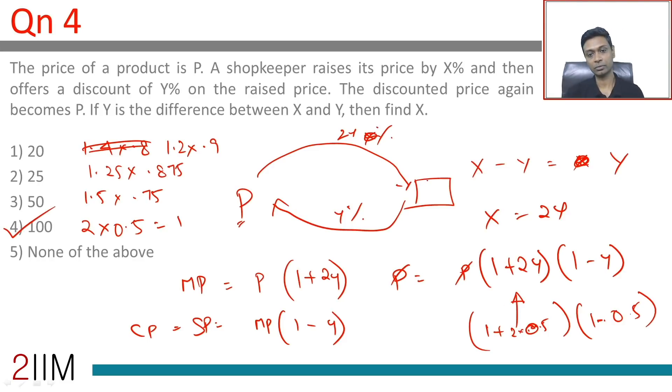It could be 100. X could be 100%, Y is 50%. You increase the price by 100% and give a 50% discount, you're back at the same price.